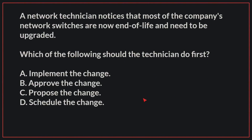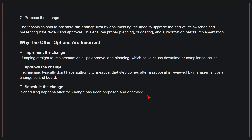A network technician notices that most of the company's network switches are now end-of-life and need to be upgraded. Which of the following should the technician do first? The correct answer is C, propose the change. The technician should propose the change first by documenting the need to upgrade the end-of-life switches and presenting it for review and approval. This ensures proper planning, budgeting, and authorization before implementation.